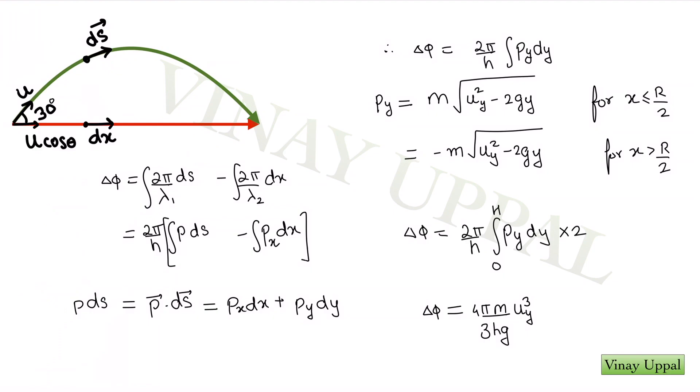For the green beam, I can write my phase change as 2π/λ times ds, where ds is my displacement at some general point along the beam. Here for the red beam, instead of ds, I will simply use dx. That is what I have written here. The first term is the phase change for the green beam.